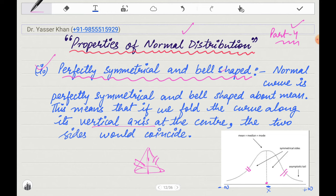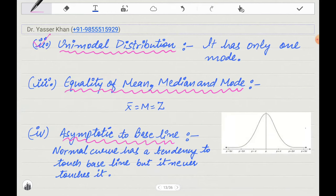The next point is unimodal. Unimodal means only one mode. When we start the mode, the mode is only one. The values will not change. The third point is equality between mean, median and mode. The mean, median and mode are equal.